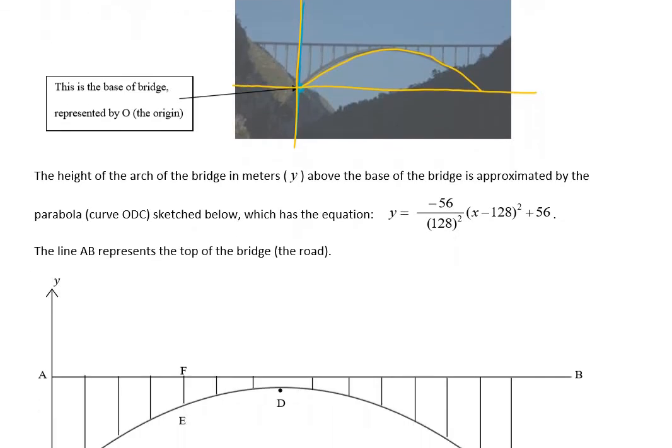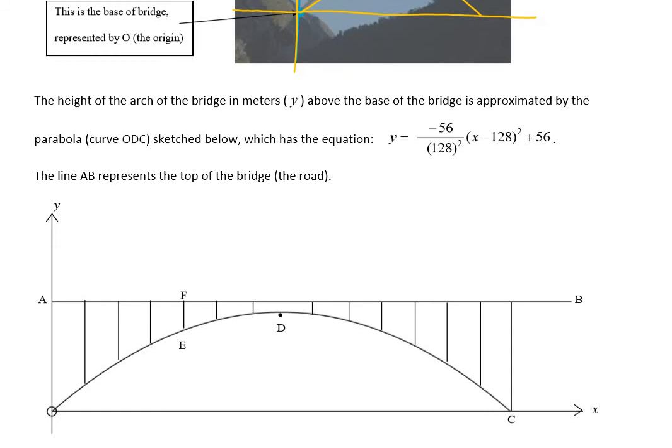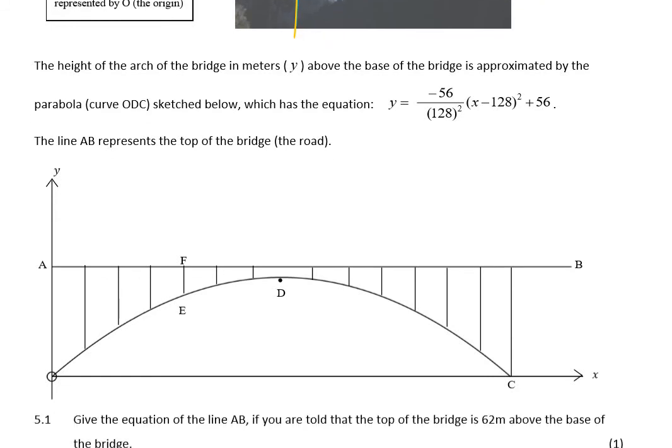It says the height of the arch in meters, y, above the base of the bridge is approximated by a curve. So here's the base of my bridge, and that curve has this formula, a parabola. Hopefully you'll see that this is the turning point format: y equals a, x minus p squared, plus q. Which means I can immediately tell you my turning point is 128, 56 - moved 128 units right and 56 meters above the bottom of the bridge.